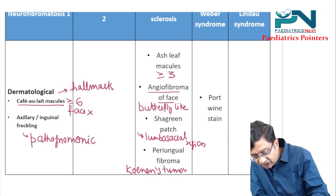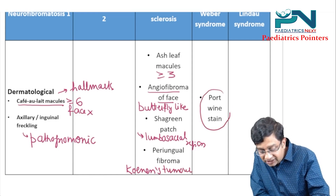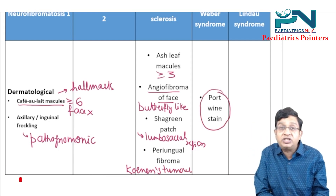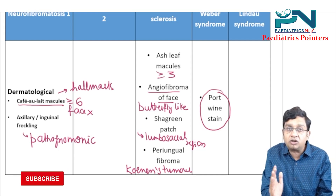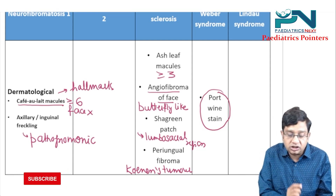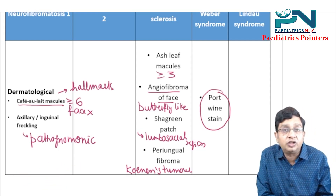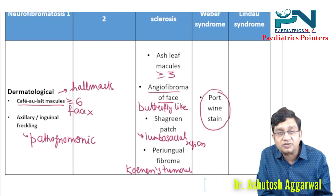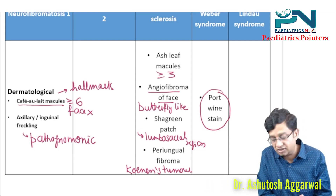In Sturge-Weber syndrome, there can be a port wine stain on the skin, which is always unilateral and does not cross the midline. That concludes our revision of the neurocutaneous syndromes. Do like and subscribe to the channel. Thanks.